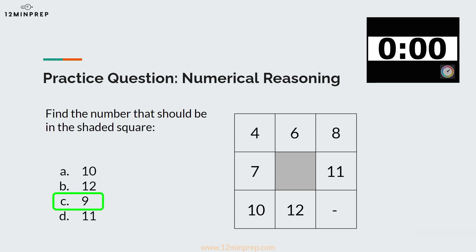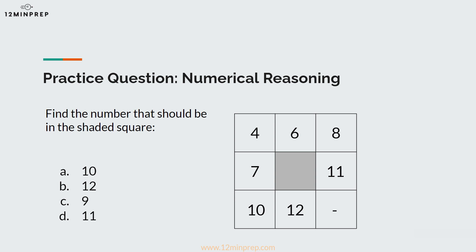The correct answer is C. There are two patterns going on here. First, as we move across the matrix, the numbers increase by 2, as we can see in the first and third row. Second, as we move down the matrix, the numbers increase by 3, as we can see in the first and third column. This means the missing number is 9, as it fits the plus-2 pattern going across the second row, as well as the plus-3 pattern going down the second column, making C the correct answer.